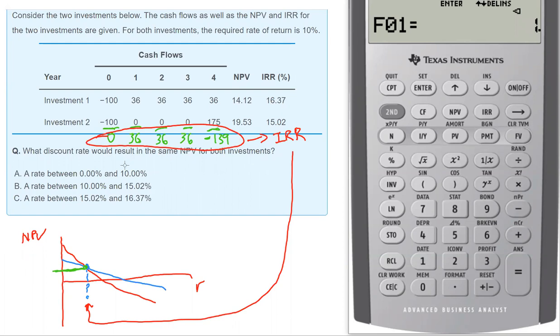Now it's going to ask me for the frequency. 36 occurs three times. So I'm just going to put in three, this is going to save me some time, hit enter and the down arrow. And the last cash flow is negative 139. So let's enter that 139 negative, hit enter, don't hit the down arrow.